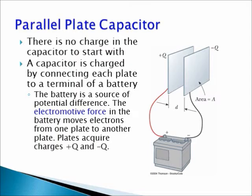An uncharged capacitor has no charge of its own, so there is no charge in the capacitor to start with. We charge the capacitor by connecting each plate to a terminal of a battery. The battery is a source of potential difference; it moves charges from one plate to the other. The electromotive force in the battery separates the charge +Q on one plate from the charge −Q on the other plate.